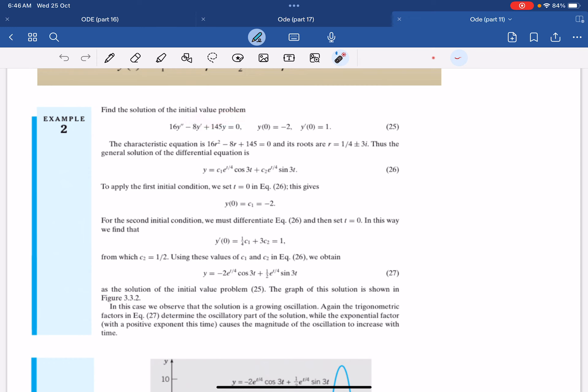So let's say we now want to find the solution to this IVP here. And these are the initial conditions. Then the characteristic equation will be 16r squared minus 8r plus 145. And so this will give us the root 1 quarter plus minus 3i.